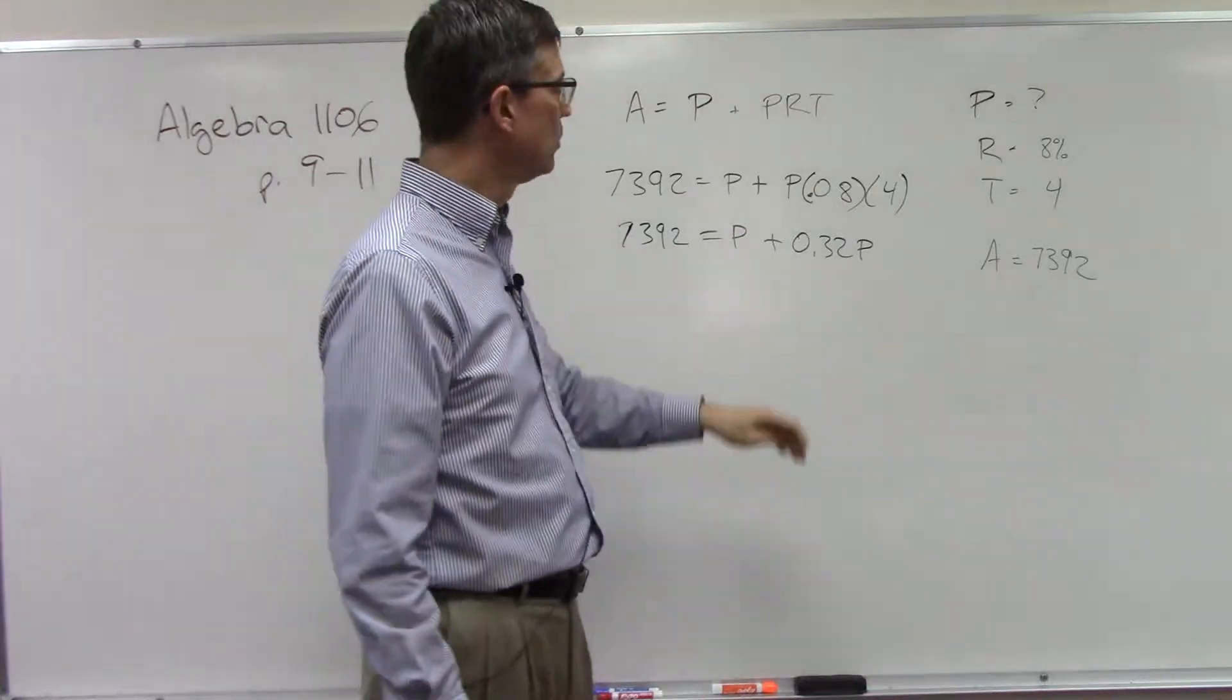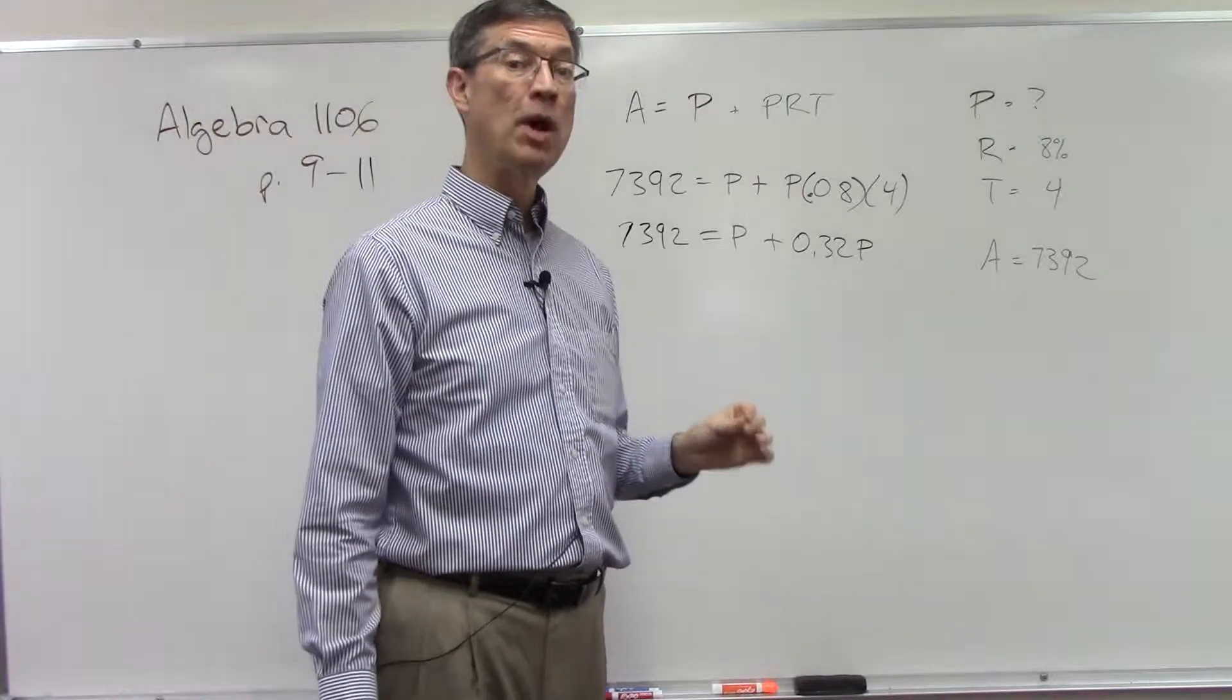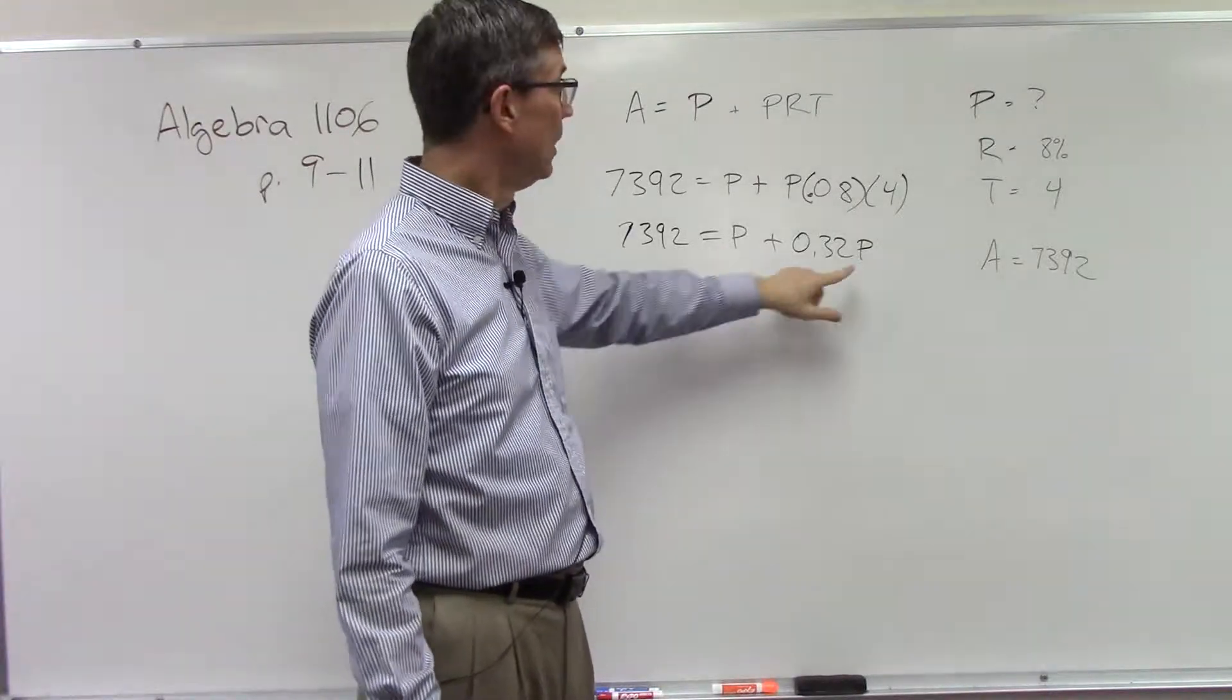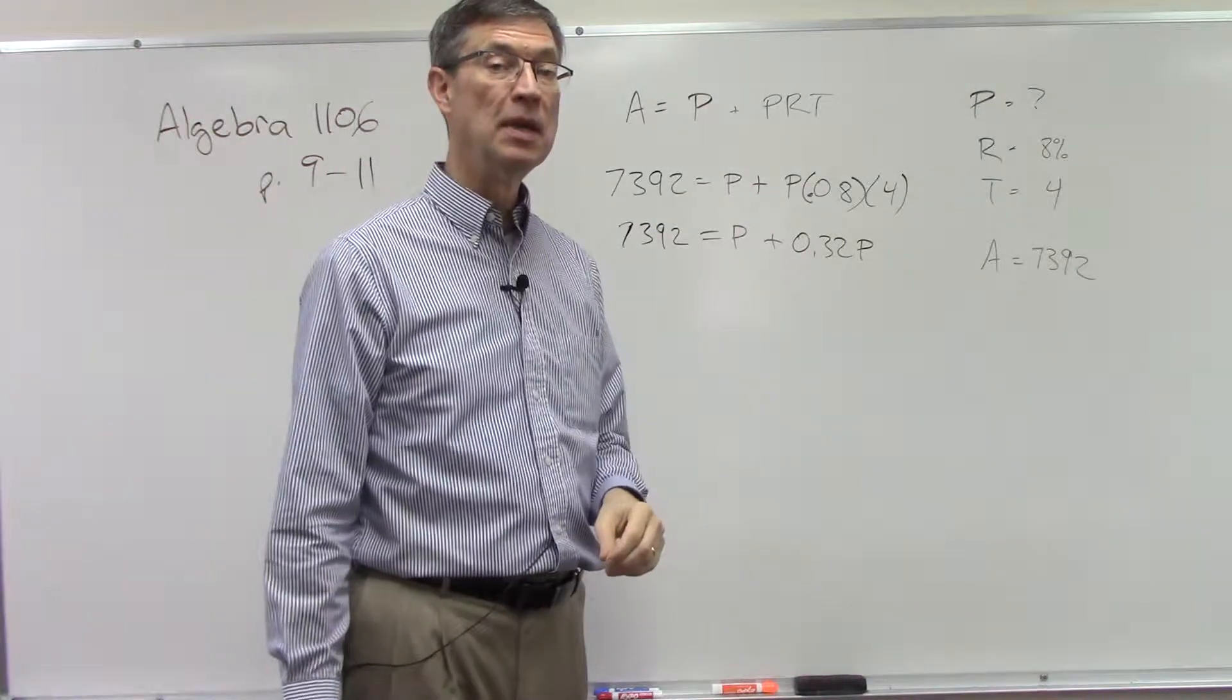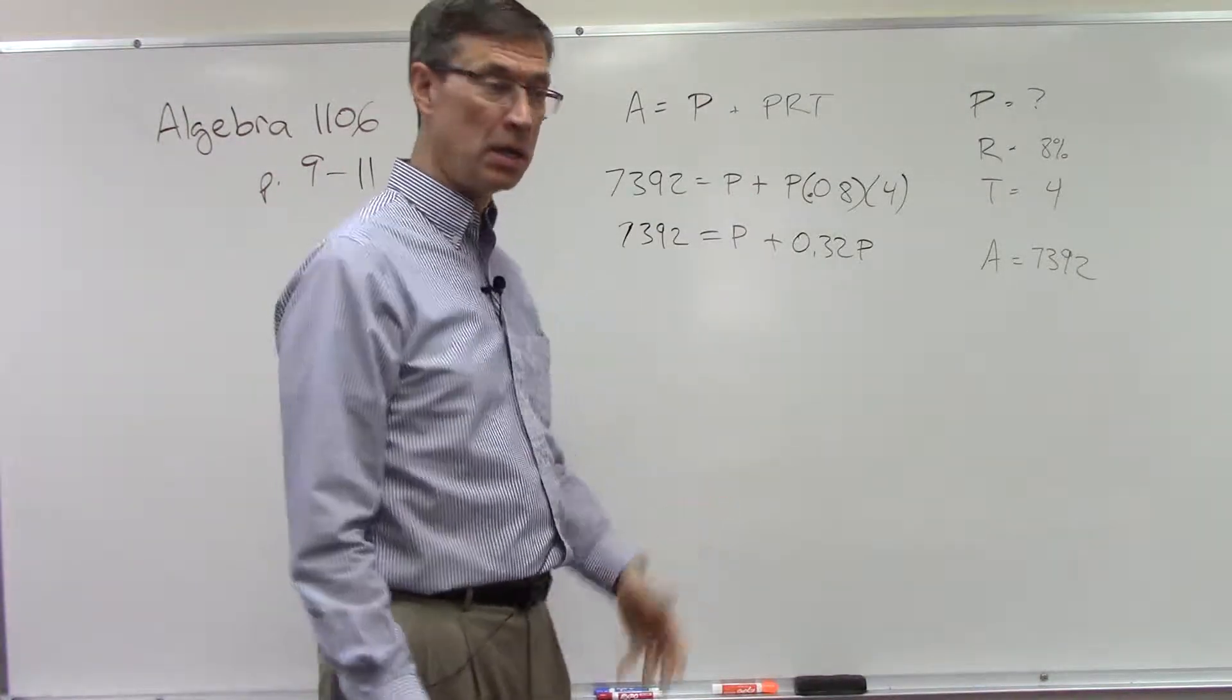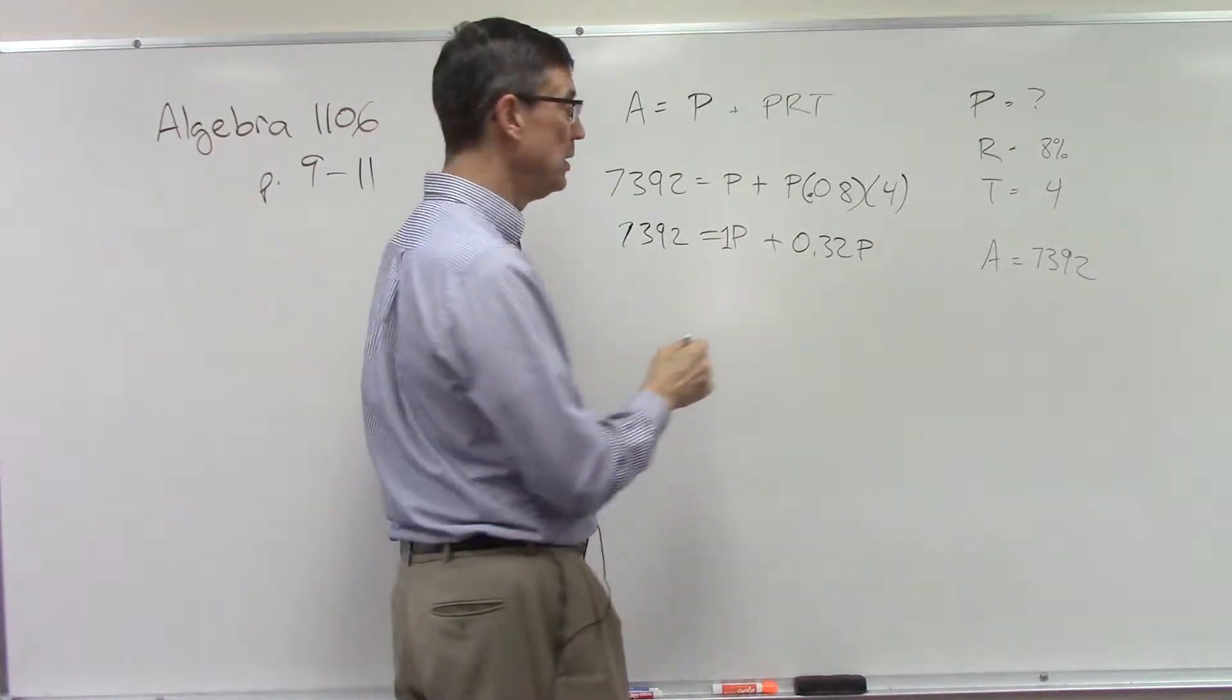What is the coefficient, what is the number in front of the P? If I don't see something there, like this P has the decimal 0.32, what is the number in front of P if there's nothing there? We can assume that it is one. I'm going to just write the one there so that we can visualize it.